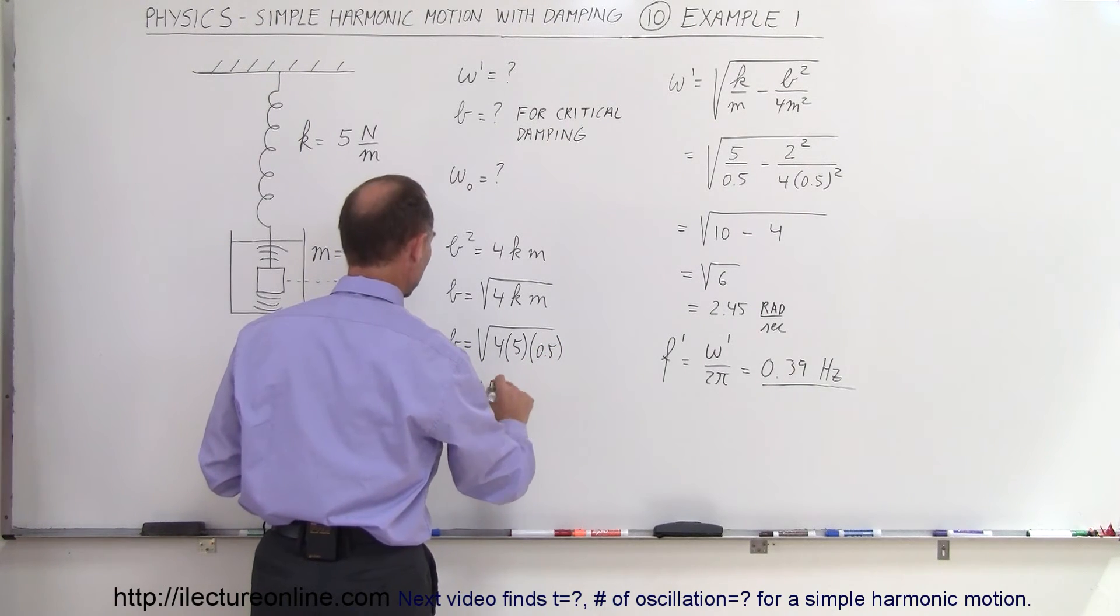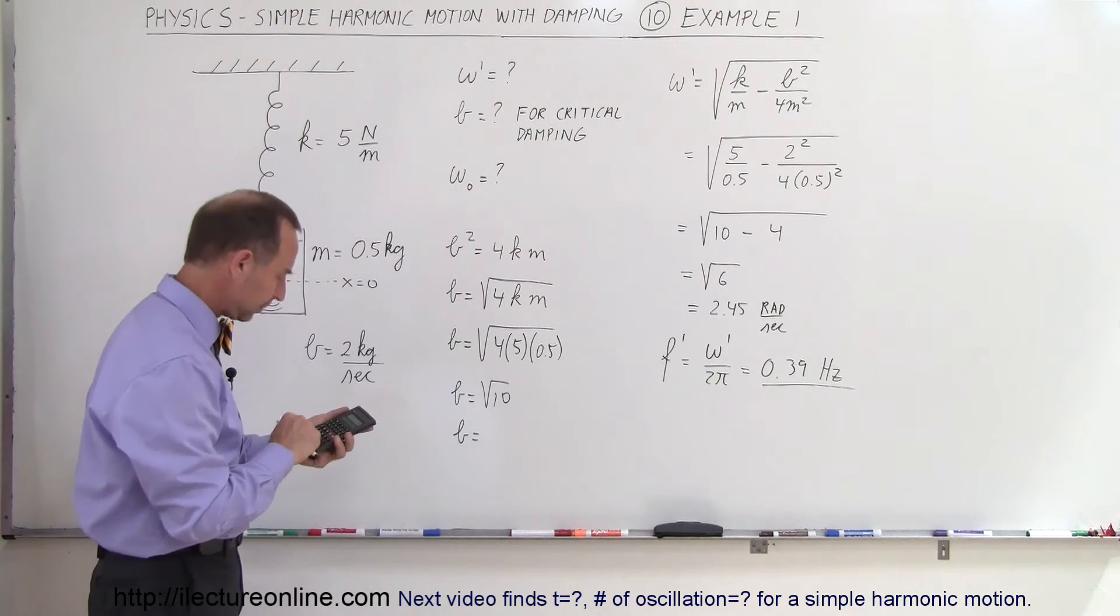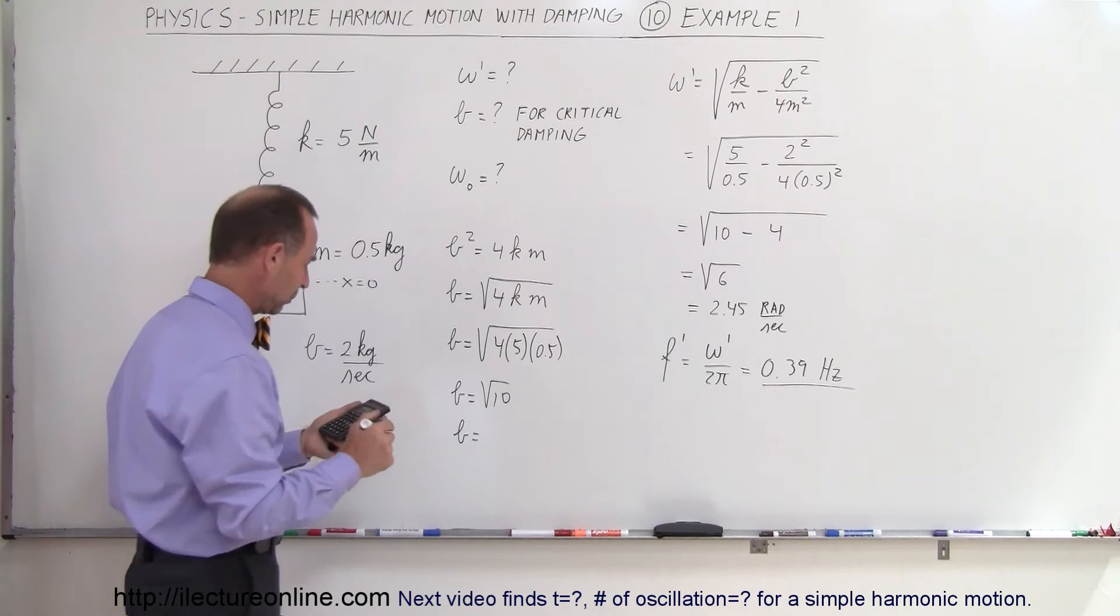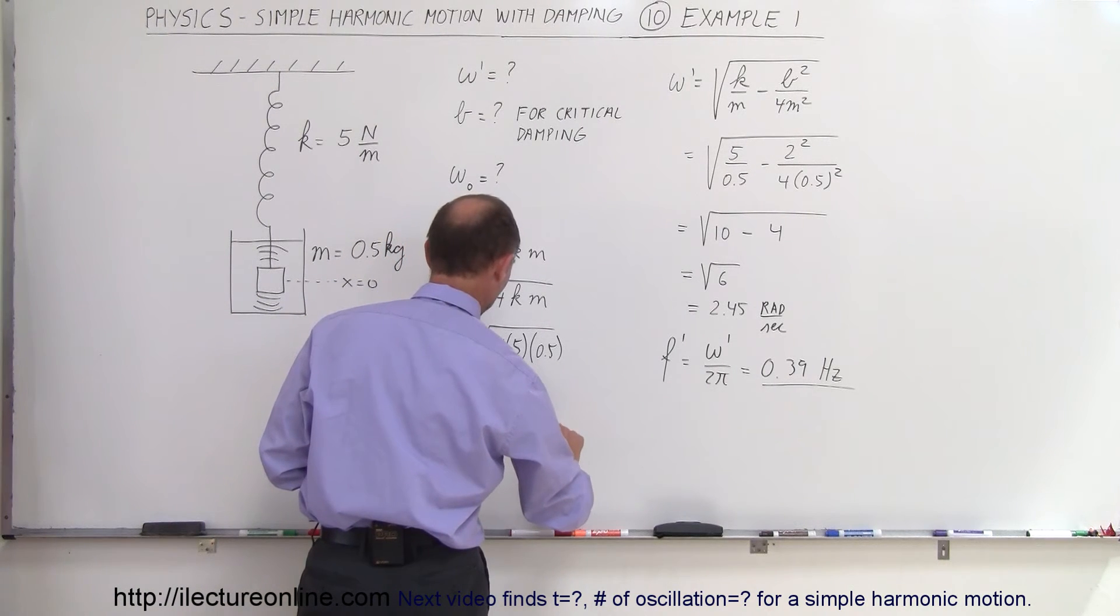So b is equal to the square root of 10, and so b is equal to, take the square root of 10, that would be 3.16, and that would be kilograms, the units are kilograms per second.